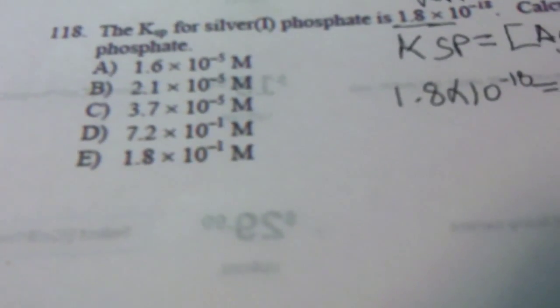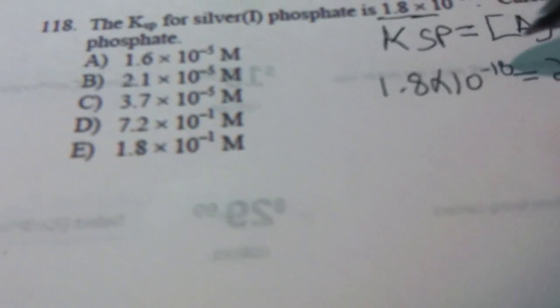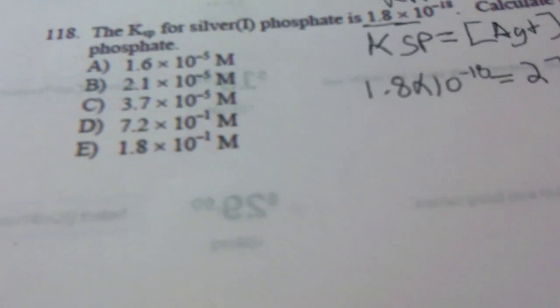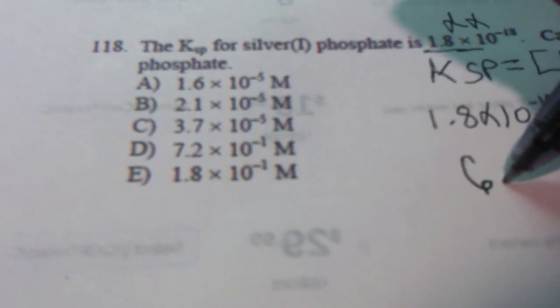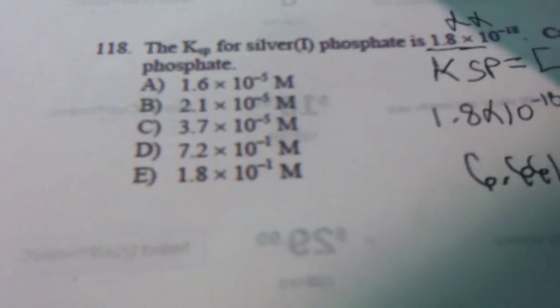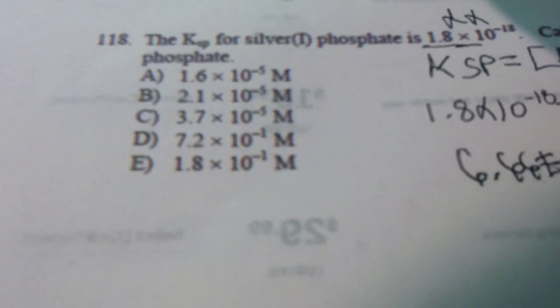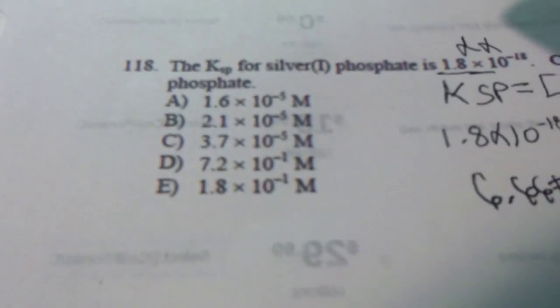So what we would do then is just divide: 1.8 divided by 27, and you would get 6.66 × 10⁻²⁰ equals x⁴.